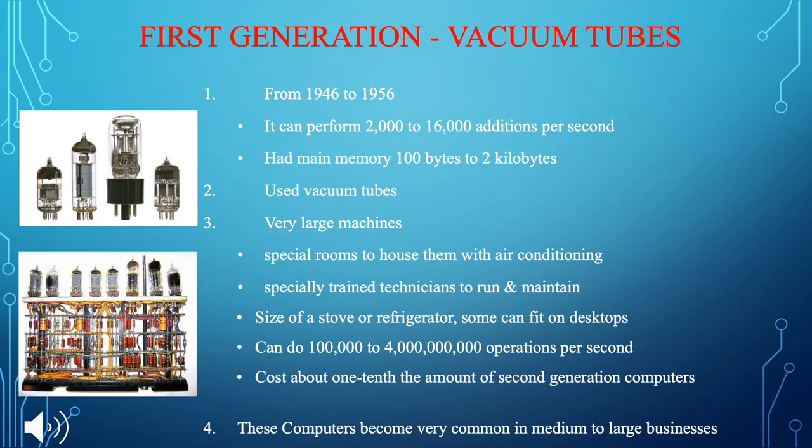The vacuum tube computer is a very large machine, requiring a special room and especially trained technicians to run and maintain it. The size of a stove and refrigerator combined. It can do 100,000 to 4 million operations per second, and costs about one-tenth the amount of second generation computers.